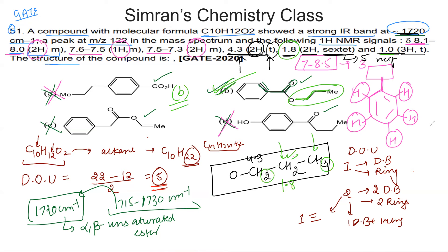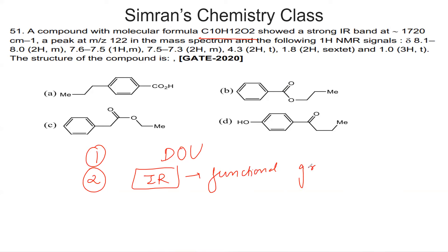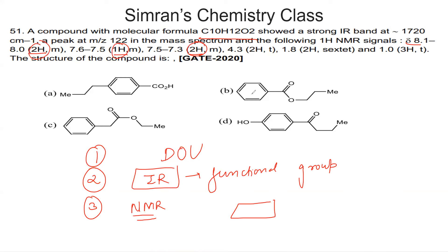In summary, to approach this type of question: first, calculate the degree of unsaturation from the molecular formula. Second, examine the IR data to identify the functional group. Third, carefully analyze the NMR data and construct segments. Here, the aromatic signals — 2H, 1H, 2H — confirm a monosubstituted benzene ring.